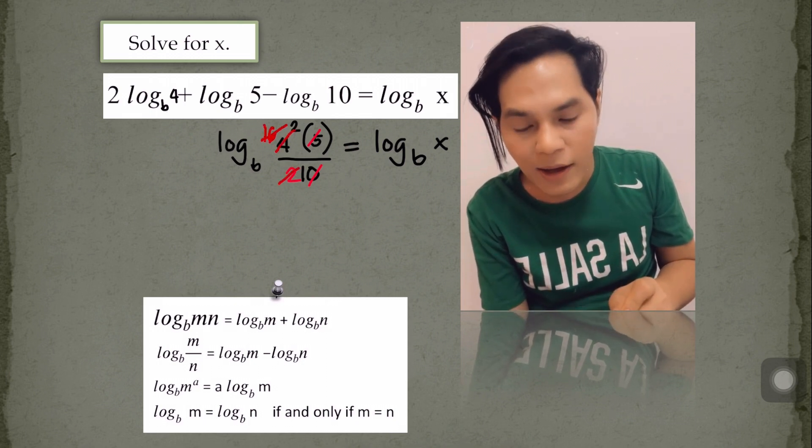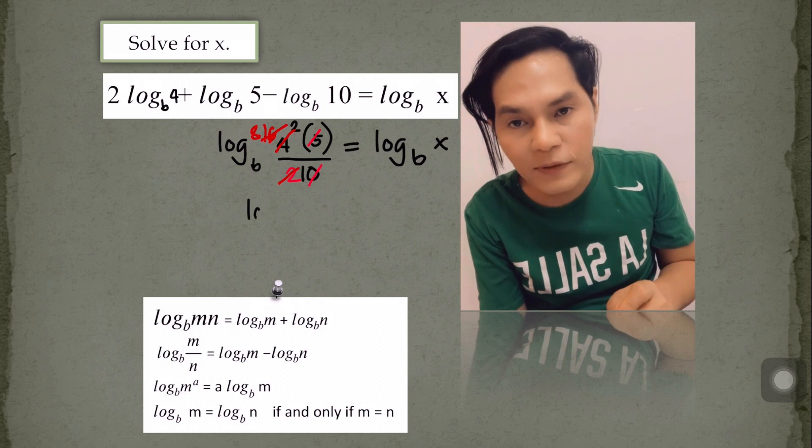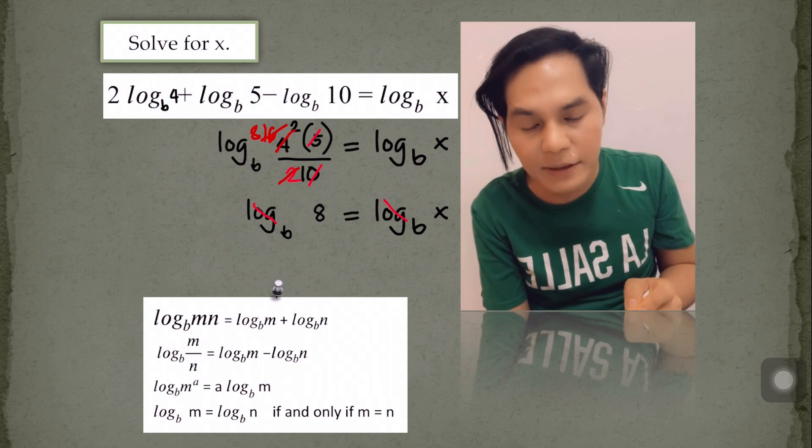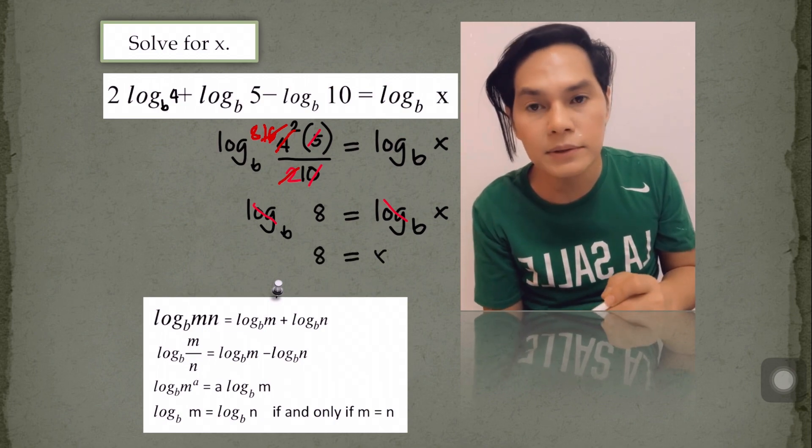So we are now having a single form of expression in both sides of the equation. So we can cancel now this log of the same base, and the remaining value of x there is equal to 8.